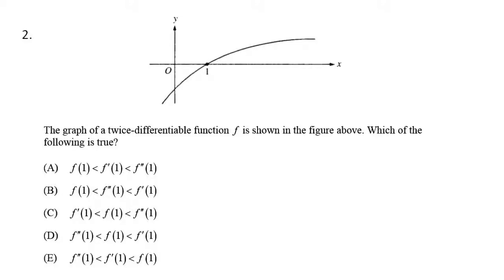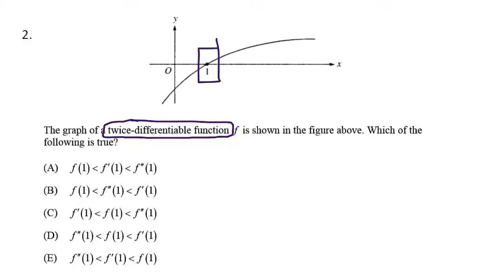For this problem, you were asked to arrange the values at x equals 1 — the function, the first and second derivative. Twice differentiable just means you can take the derivative twice. If we're pinpointing at this particular value and this is the graph of f, well I know f at 1 is 0, because we're sitting there on the x-axis.